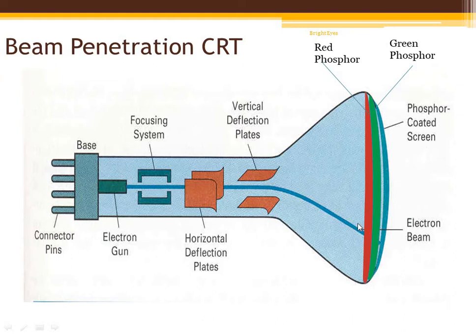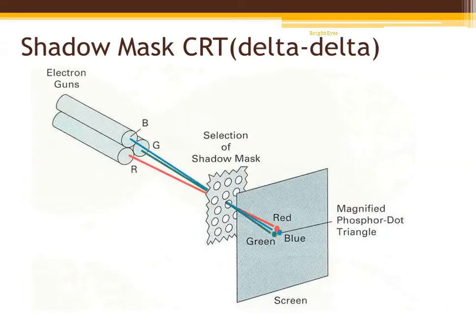The screen color depends on the speed of the electron beam, which is controlled by the beam acceleration voltage. By controlling the beam acceleration voltage, we can make the beam strike either the red layer or the green layer and see the corresponding spot on the screen. This is the basic technology of beam penetration CRT — the construction is very simple. We only coat the screen with two layers of red phosphor and green phosphor, and set the beam acceleration voltage to achieve different types of colors.